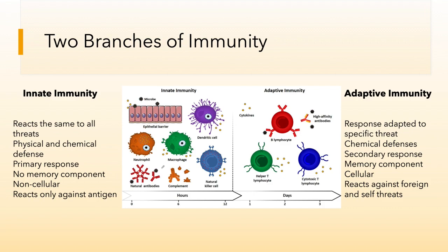This will include things like inflammation and fever, phagocytosis, those sorts of things. There is no memory component in the innate immune system, and it will react only against a foreign antigen. It does not act against self-threats or host threats.